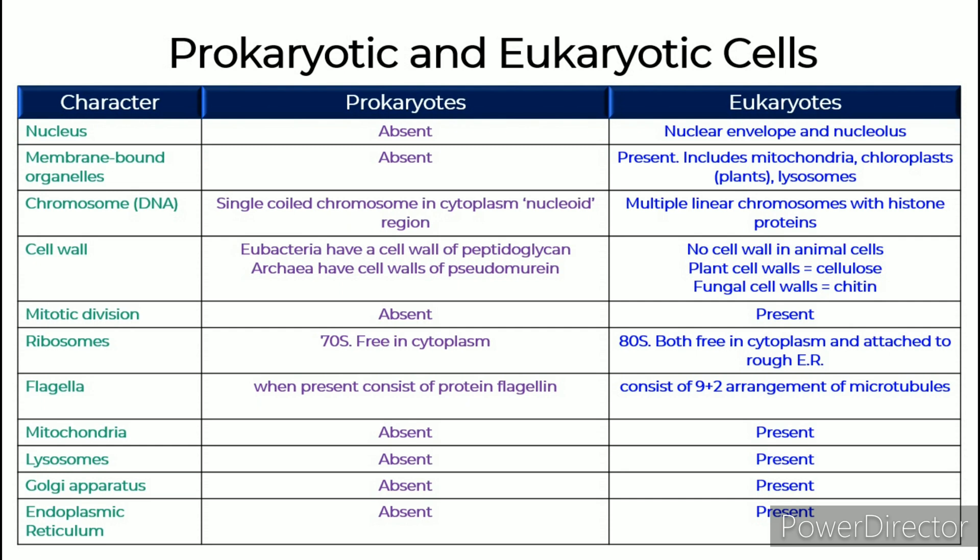Ribosomes: In prokaryotes, ribosomes are 70S and free in the cytoplasm. In eukaryotes, they are 80S, both free in the cytoplasm and attached to the rough endoplasmic reticulum.